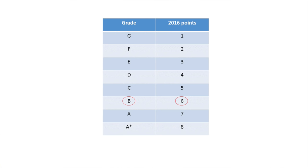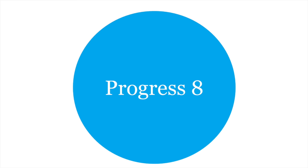If the Attainment score was 6.5, the average grade for pupils would have been halfway between a B and an A. The Progress 8 score shows whether pupils have performed better than expected in their GCSEs, considering their starting point. Key Stage 2 results are used to predict each pupil's expected grades across eight subjects at the end of Key Stage 4. This is expressed as a number which represents how much more or less progress in grades pupils in a school make on average.